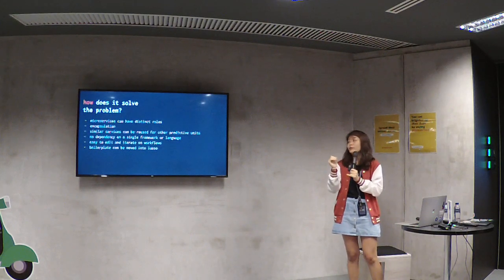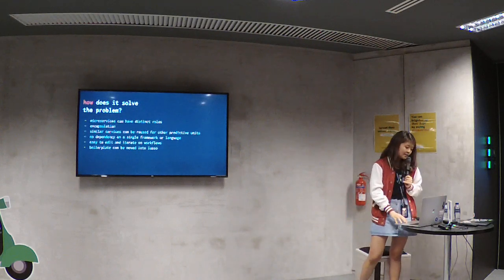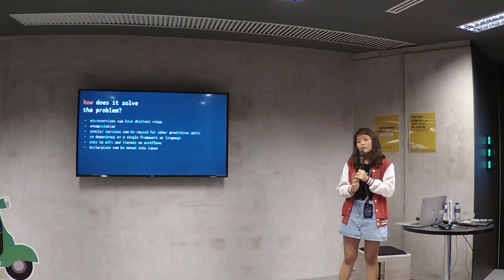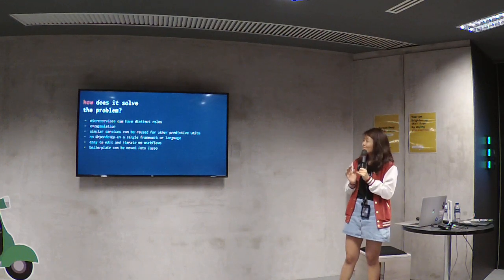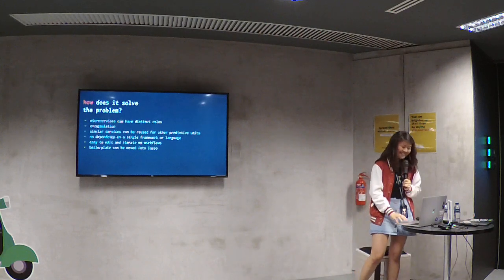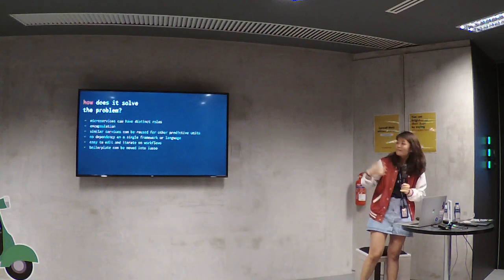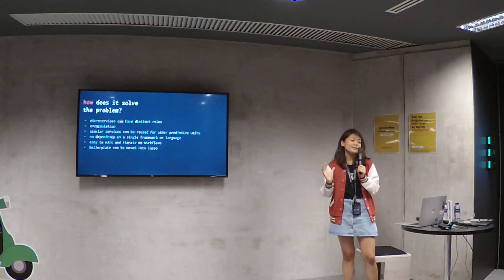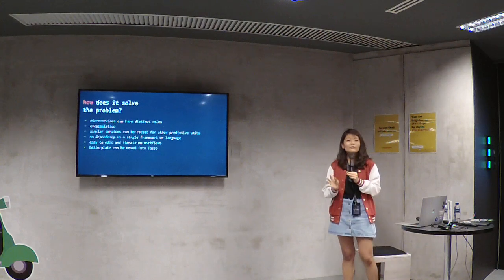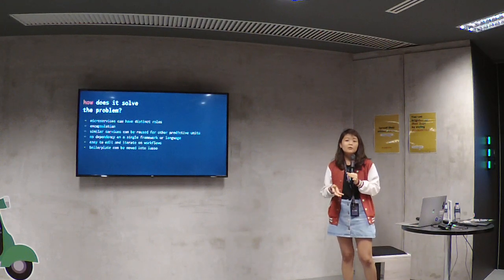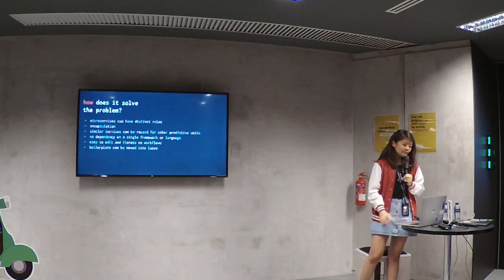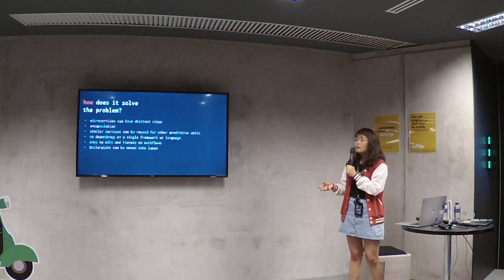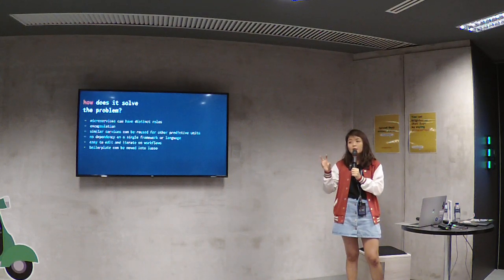All they care about is whatever they get and whatever they have to return. Similar services can also be used for other predictive units — like feature getters that can be reused. There's no dependency on a single framework or language. You can have a predictive unit that comprises microservices in Go, Python, and Java — whatever your developer is comfortable with or whatever is best suited for that task. It also means it's extremely easy to edit and iterate on workflows because you don't have to write additional code, and the configuration of the workflow sits outside of the definition of those services.